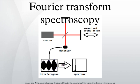By making measurements of the signal at many discrete positions of the movable mirror, the spectrum can be reconstructed using a Fourier transform of the temporal coherence of the light.